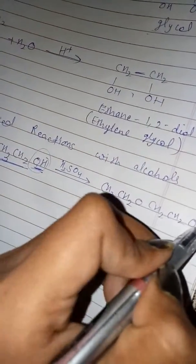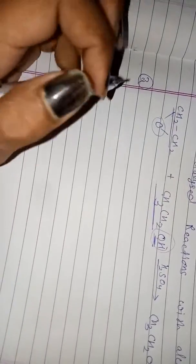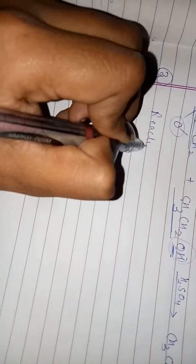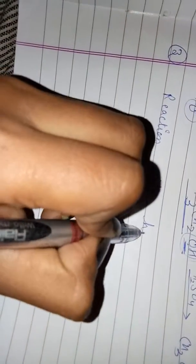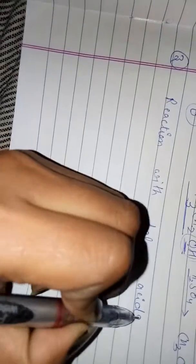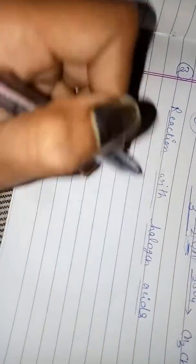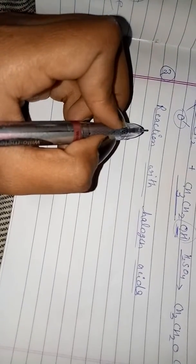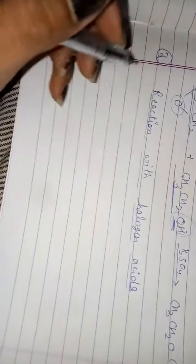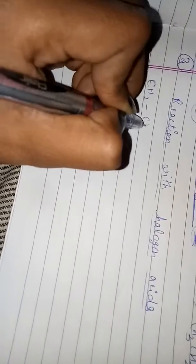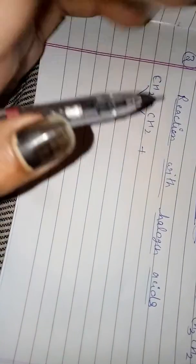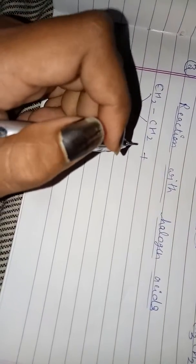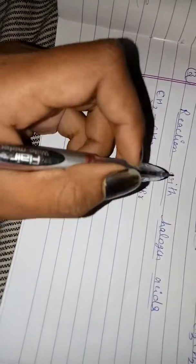Similarly, one more reaction: reaction with halogen acids. Epoxide reacts with HCl and HBr to form chloro- and bromohydrins. For example, CH₂–CH₂ epoxide reacts with HBr.